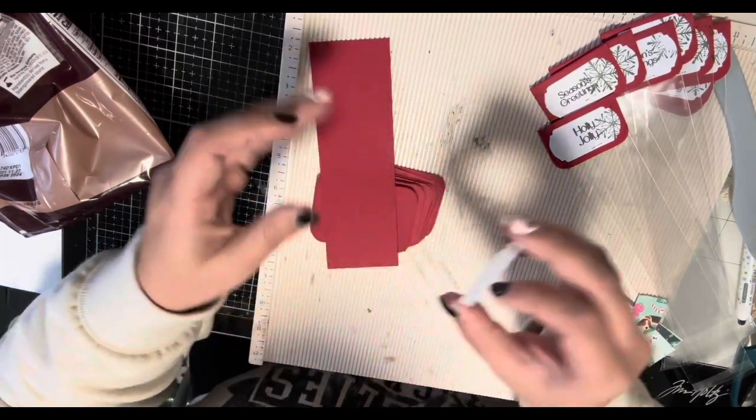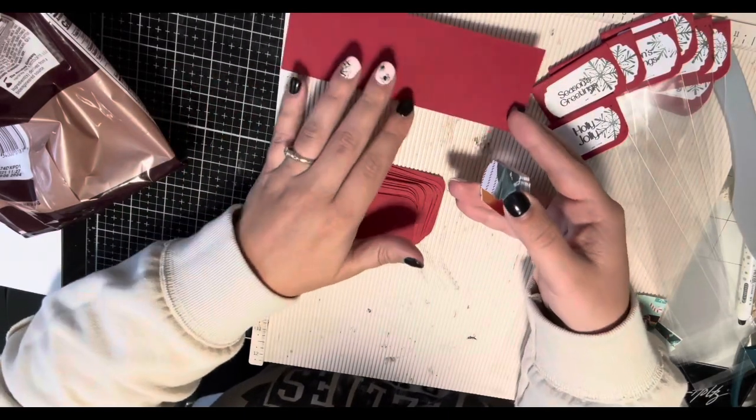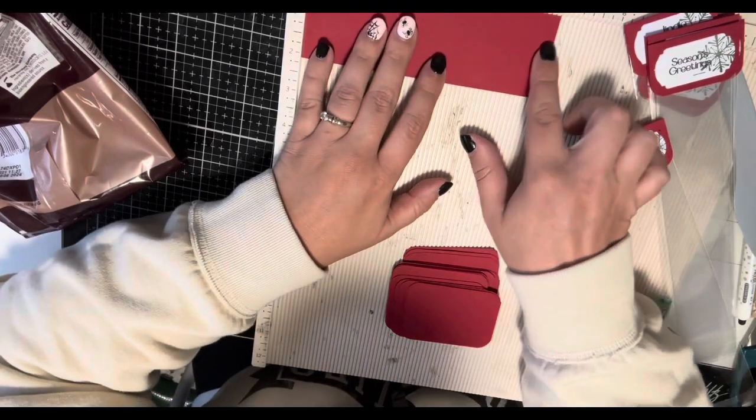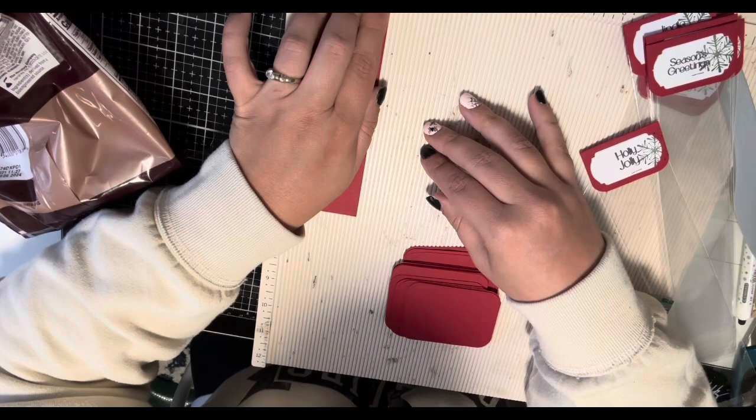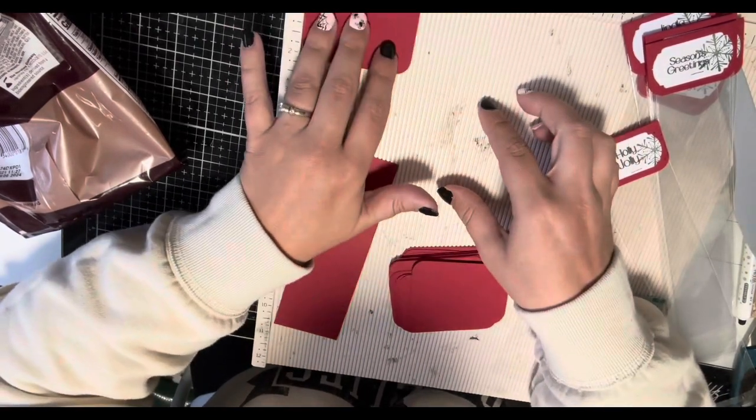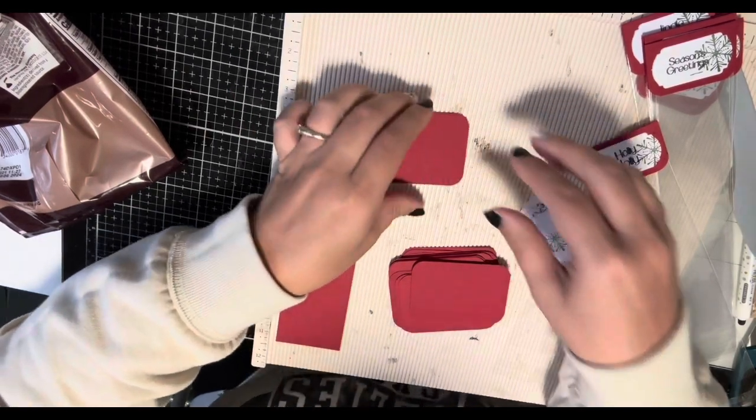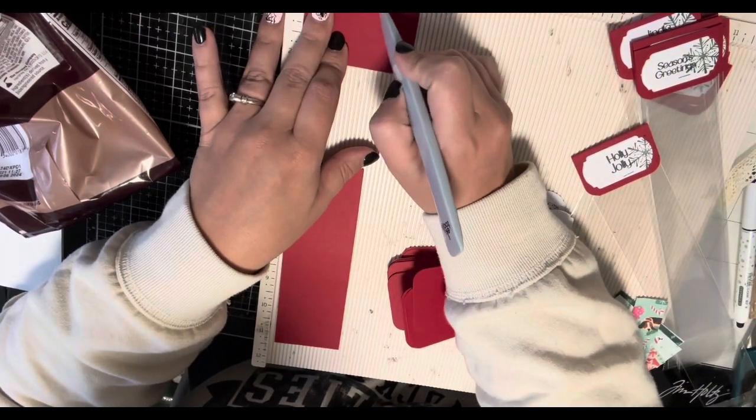Decide on how many you want and get them all cut and scored. The base of my box is 6.5 by 2.125 inches. My topper is 3 by 2.125 inches, and on the topper you're going to want to score it right in the middle, so at 1.5 inches.